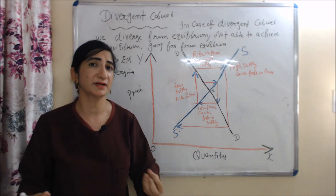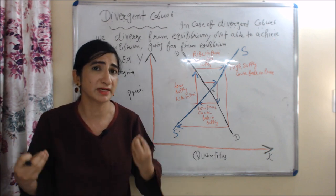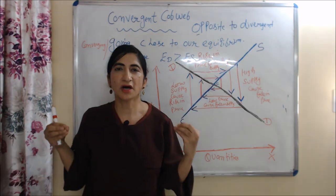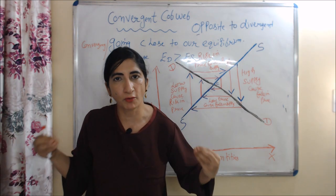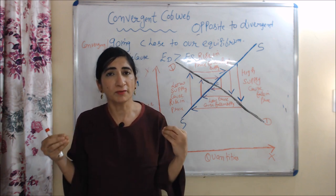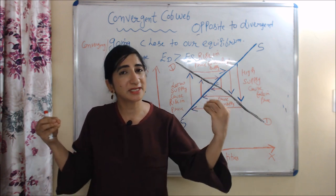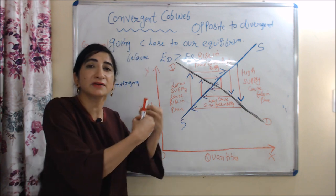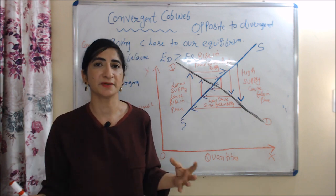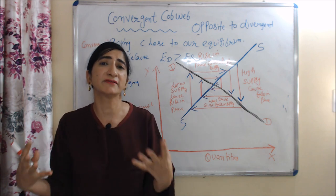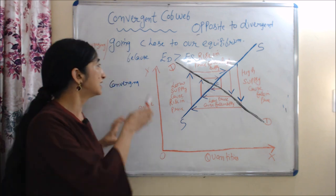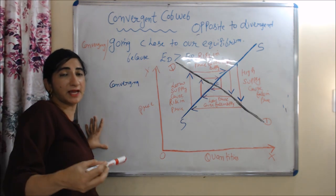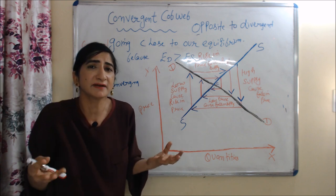We are diverging from our equilibrium — we are not able to achieve our equilibrium, we are going far from it. Now we will talk about convergent cobweb. Convergent cobweb is just opposite to divergent cobweb. In the case of convergent cobweb, we are converging with our equilibrium — means we are going close to our equilibrium — because here elasticity of demand is more than elasticity of supply.